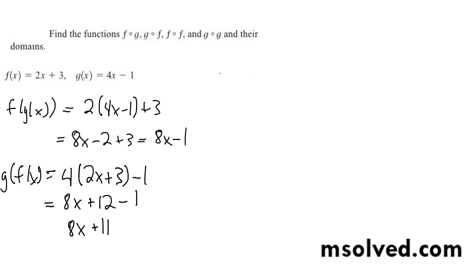And then we do f of f. So f of f of x gives us 2 times 2x plus 3, plus 3 gives us 4x plus 6 plus 3, which is equal to 4x plus 9.